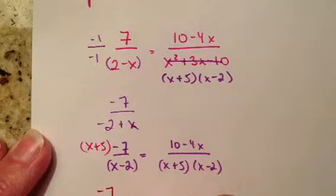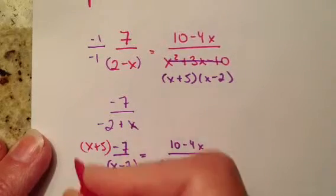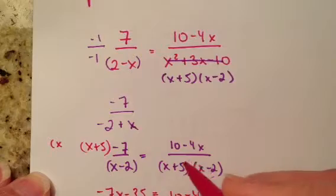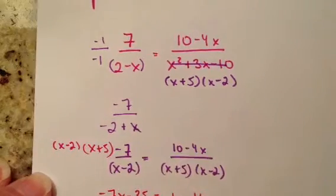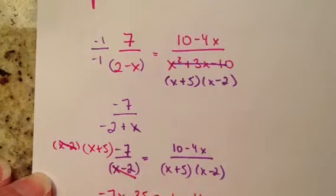So I'm going to distribute that negative 7. So negative 7x minus 35 equals 10 minus 4x. Because remember, if I multiply by the whole denominator, x minus 2, all of that, these two guys go away. And then I'm just left with that.